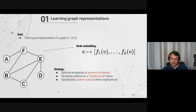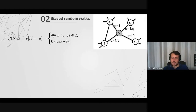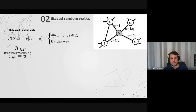How these similarities are defined is based on a neighborhood notion. We want nodes that are in their respective neighborhoods to have similar embeddings. This neighborhood is not based only on first-order neighbors but on a biased random walk — we take a node, sample a random walk, and the nodes on this walk are considered neighbors. We then try to make the embedding preserve this kind of similarity.